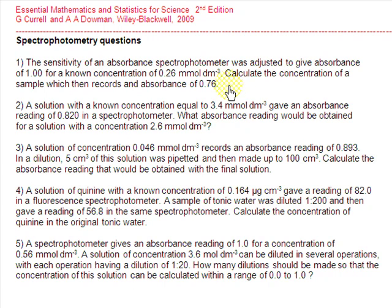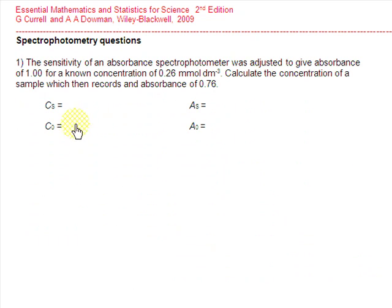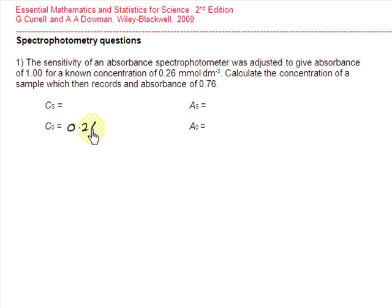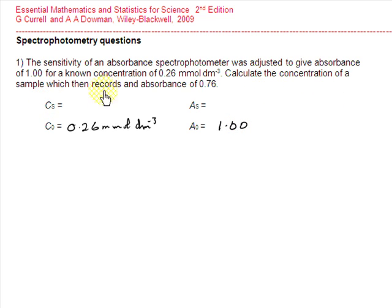We can now work through the answers to these five spectrophotometry questions. In this first question, we're told that a known concentration of 0.26 millimoles per decimetre cubed gives an absorbance of 1.00. These will be our values for C0, the known concentration. And what we have to do is calculate the concentration of a sample that records an absorbance of 0.76.